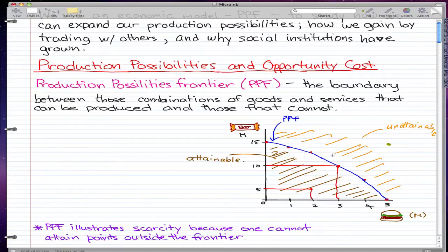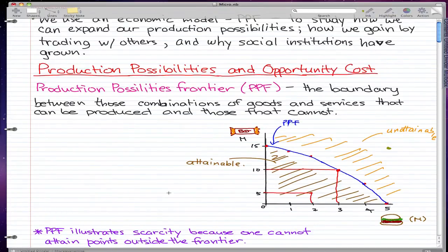Points outside of the production possibilities frontier are unattainable. This leads us to the point that the PPF illustrates scarcity because one cannot attain points outside the frontier. Let's write down what we're thinking.